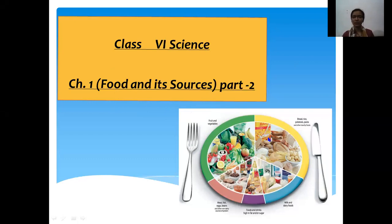Nutrients are the chemical substances which are present in the food items. Ingredients are the raw materials which we use to prepare food items. For example, for making kheer, what we need is rice, milk, sugar, and dry fruits. So the dry fruits, rice, milk, and sugar are the ingredients.